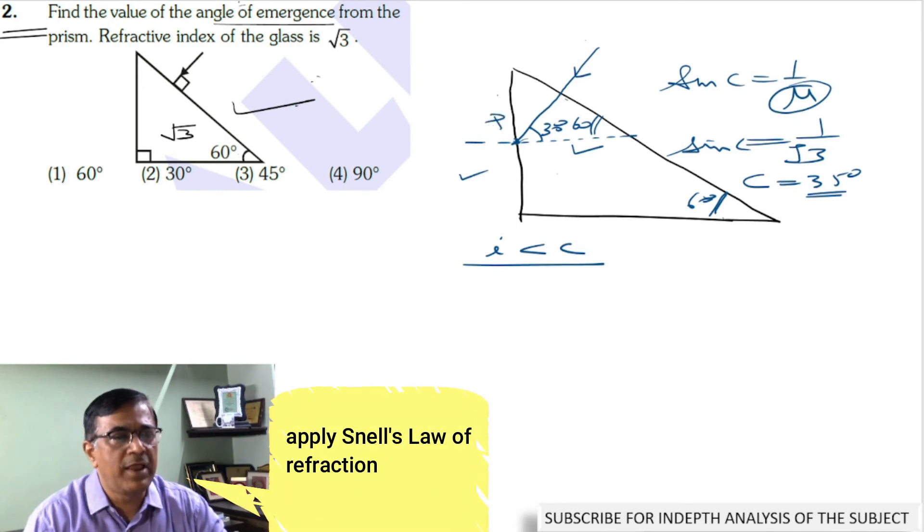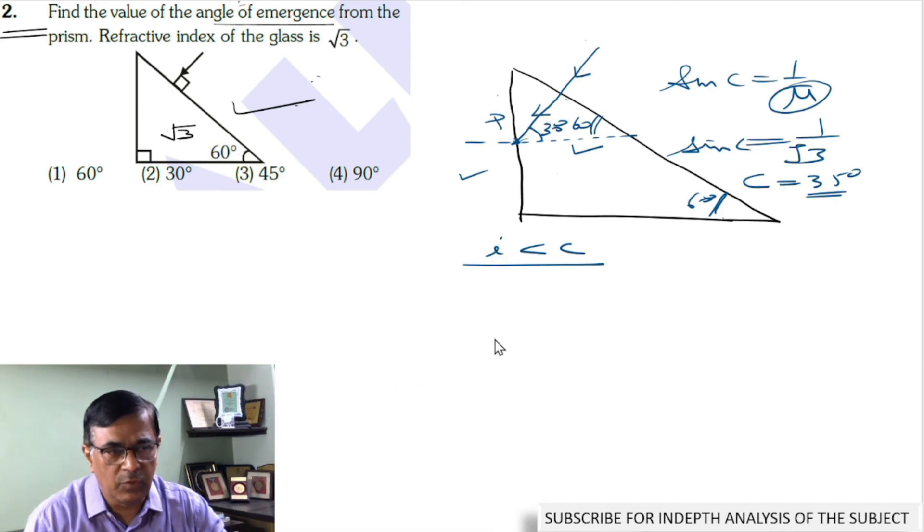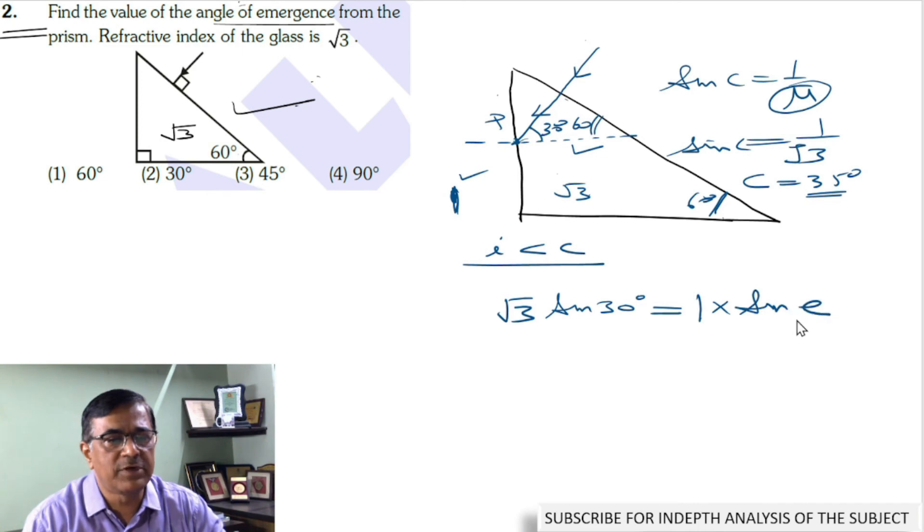Now as you apply refraction, you should be writing that μ (√3, the refractive index of this medium) multiplied by sine of 30 degrees—this is Snell's law of refraction—and the refractive index of this medium is 1. Hence, this is 1 multiplied by sine of the angle of emergence.